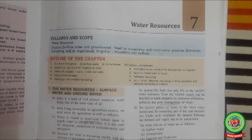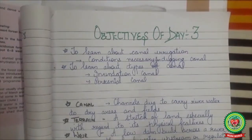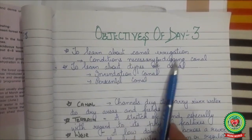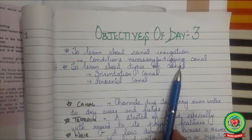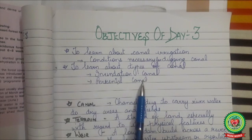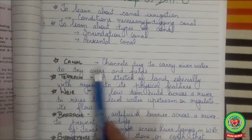In the day two video we started with the methods of irrigation, under which we learned that there are two methods of irrigation — one is primitive method and one is modern method. Today we will be learning in detail about one of the primitive methods: canal irrigation, about the conditions necessary for digging a canal, and about the types of canal, which includes inundation canal and perennial canal.